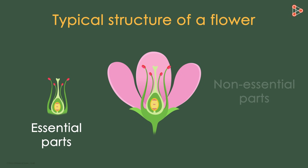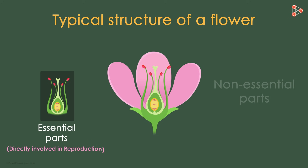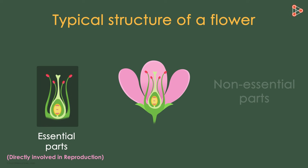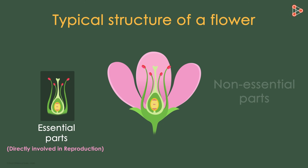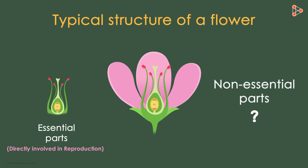These are essential because they are directly involved in the process of reproduction. If these structures are not present, then a plant will not be able to reproduce — that's absolutely correct. So how will the plant be able to reproduce if the gamete-producing structures are not present?